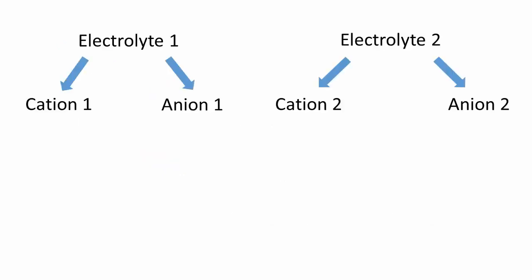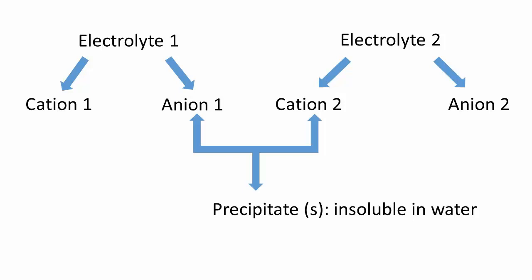Electrolytes dissociate into ions. When two solutions of different electrolytes are mixed, the cations of one solution may have strong interactions with the anions of the other. Their attraction is so strong that they can bind to form a solid, which we call a precipitate.